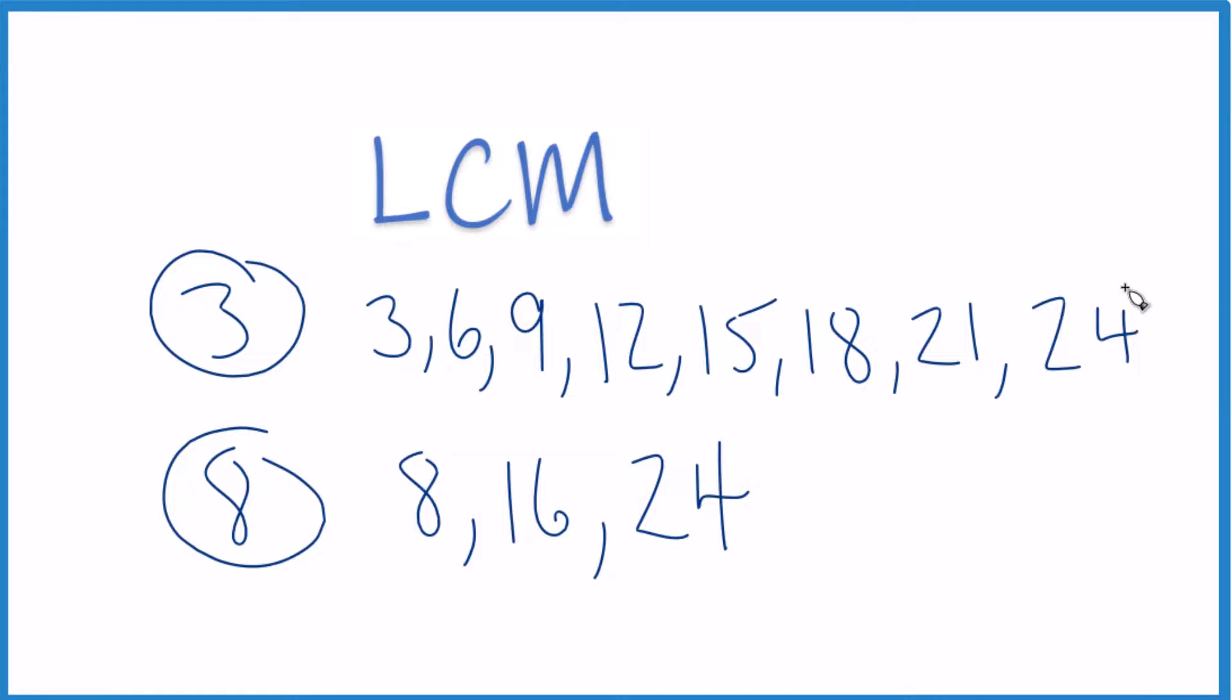So you can see, this is the number right here in common. This is the least common multiple for three and eight. Three goes into 24, eight goes into 24, and this is the first number that we found that they share. So that's the least common multiple.